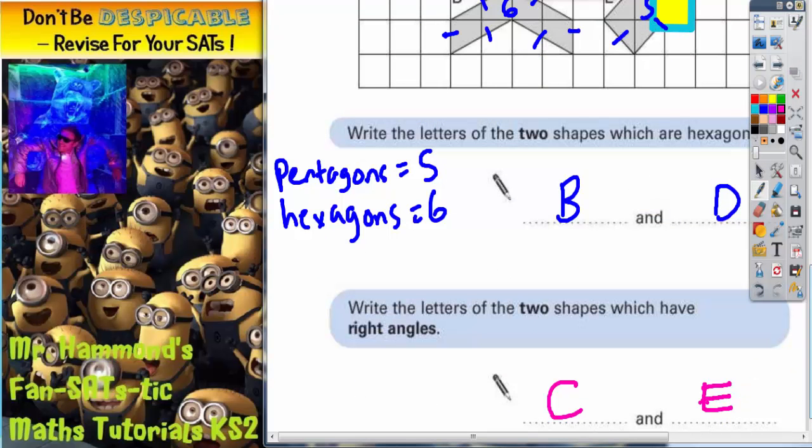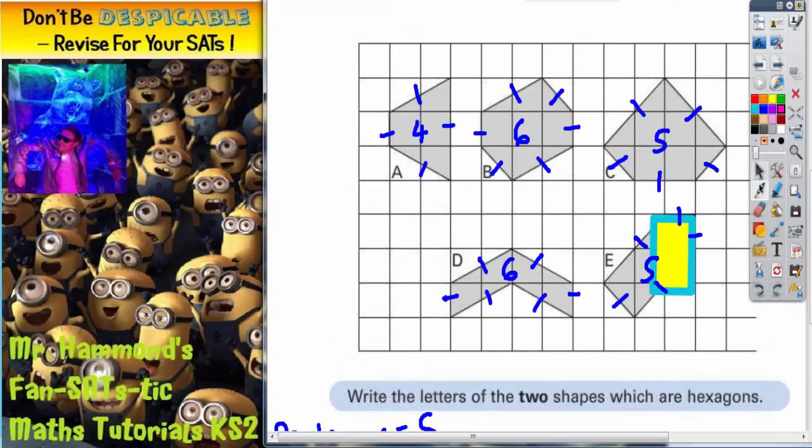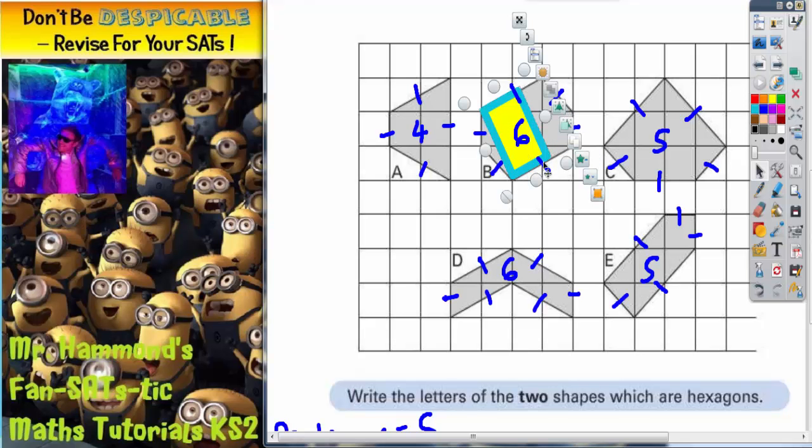If you're not sure about a right angle, use the tracing paper to check. So, for example, you may think that this angle down here in shape B is a right angle. Put your tracing paper on it, line one of the edges of the tracing paper with one of the sides of the shape. So you can see this edge of the tracing paper is lined up with this edge of the shape.